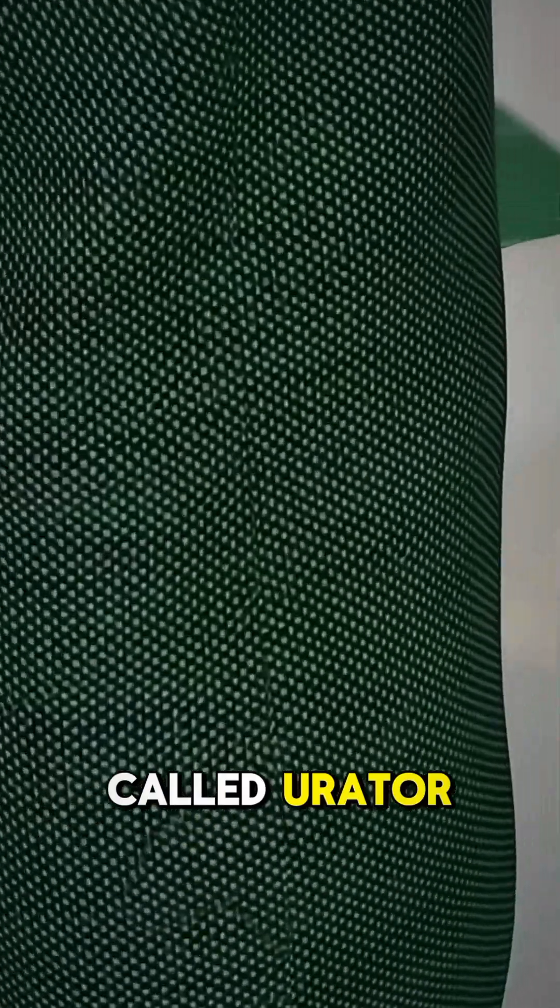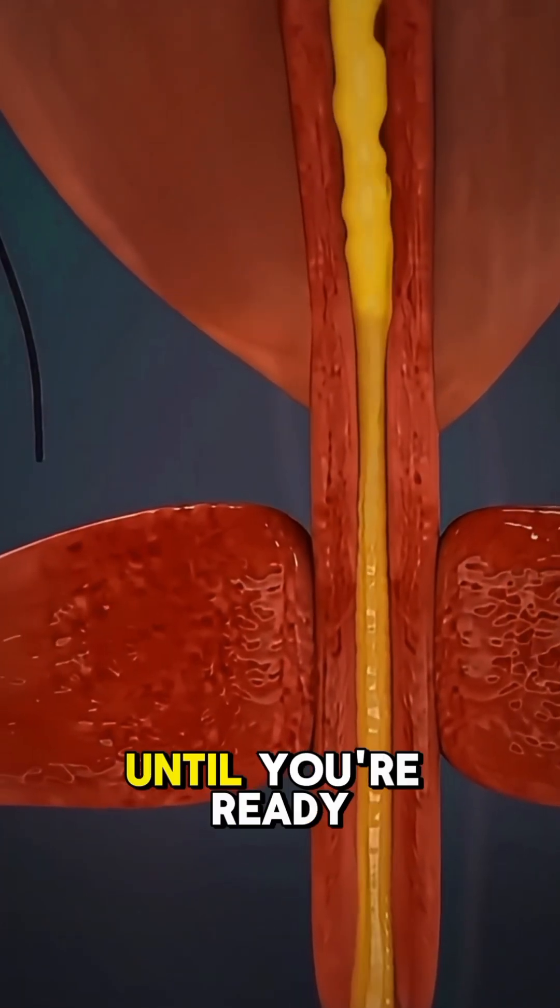The urine travels down tubes called ureters and is stored in the bladder until you're ready to release it.